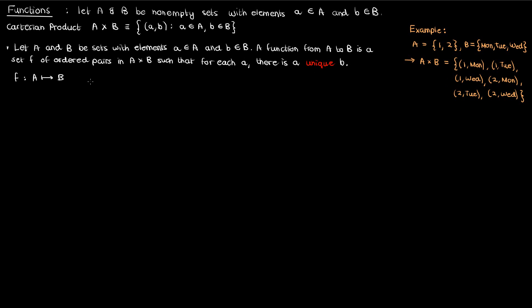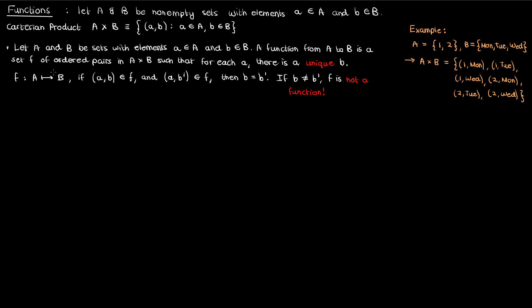Because there's a unique b for every element in a, we can say that if the ordered pair (a, b) belongs to the function set f, and if the ordered pair (a, b') also belongs to the function set f, then b and b' must be equal. If they're not equal, the set f is not a function.